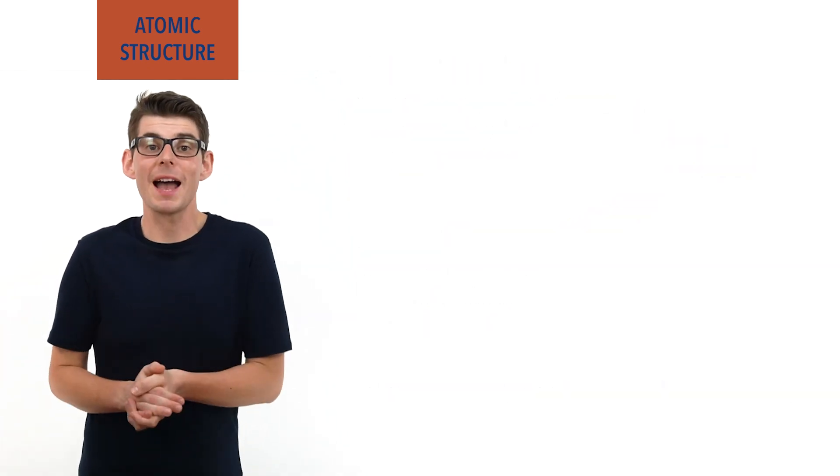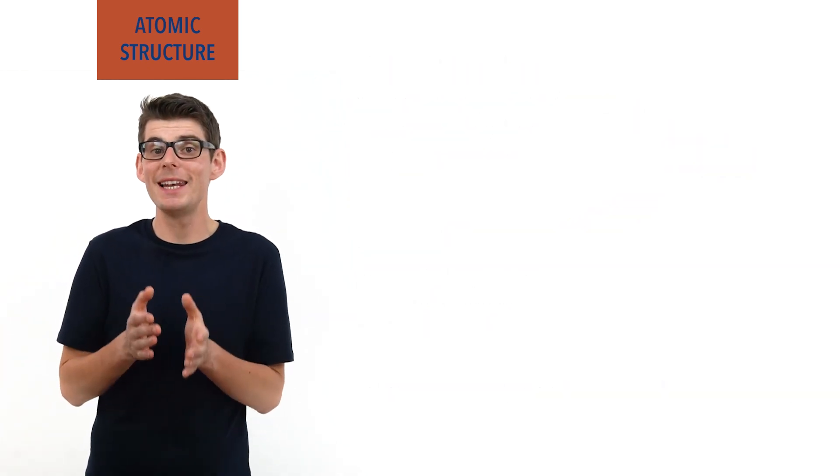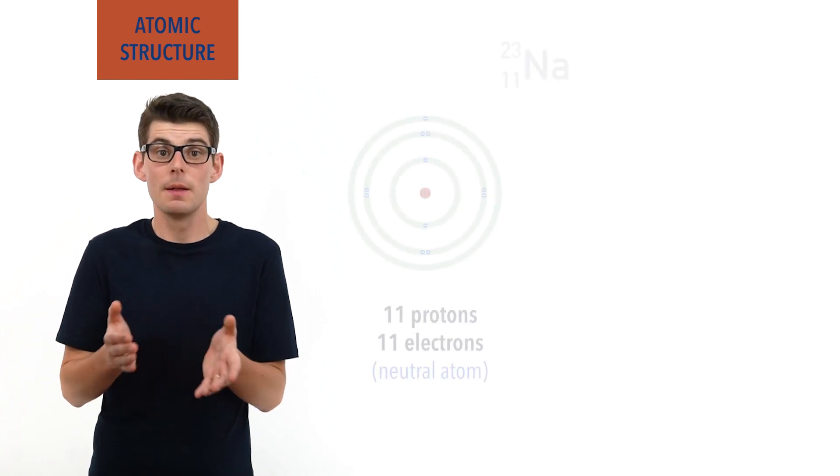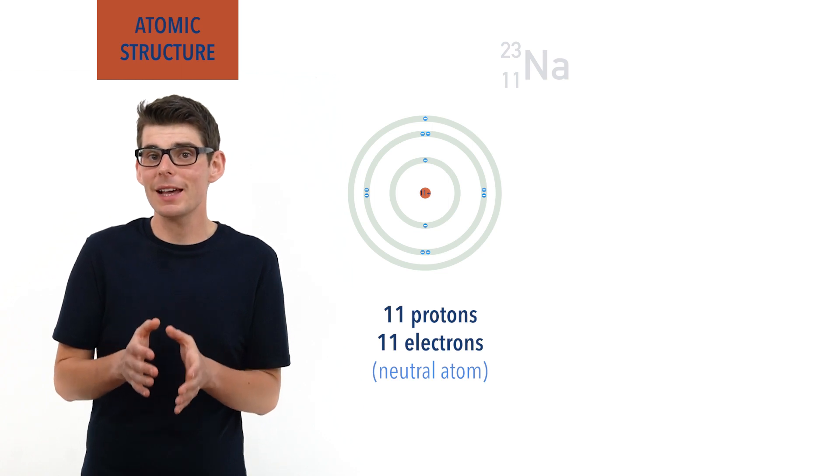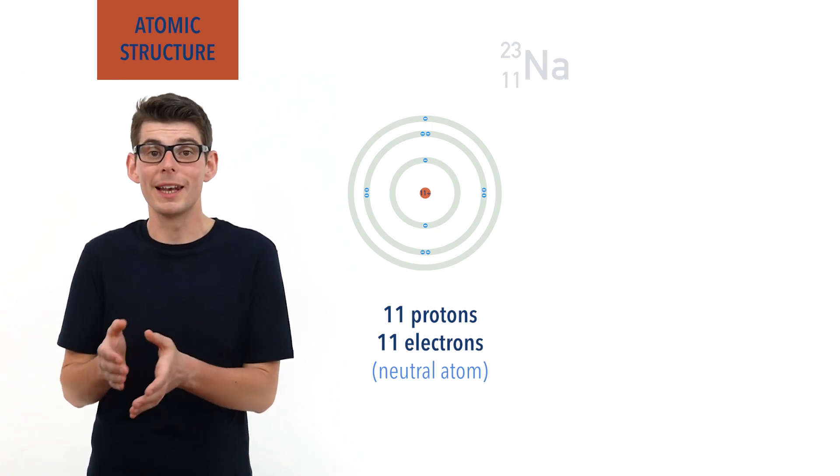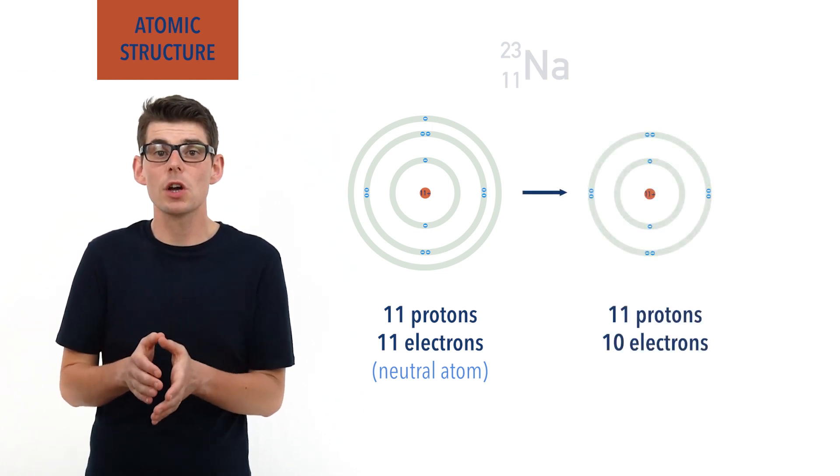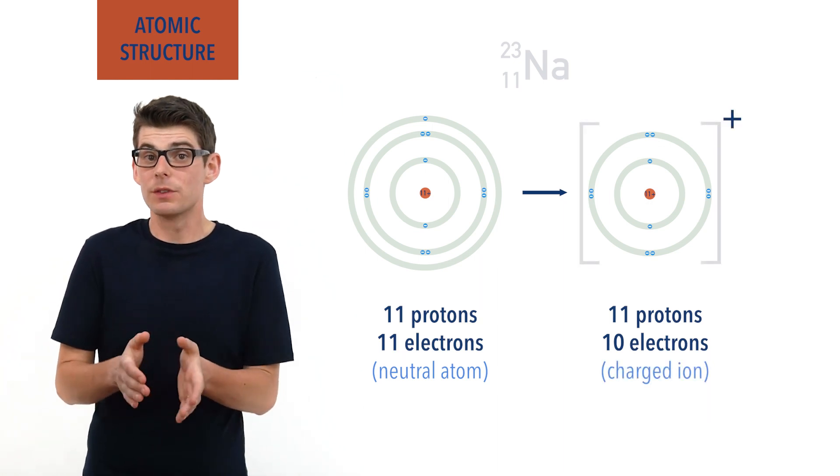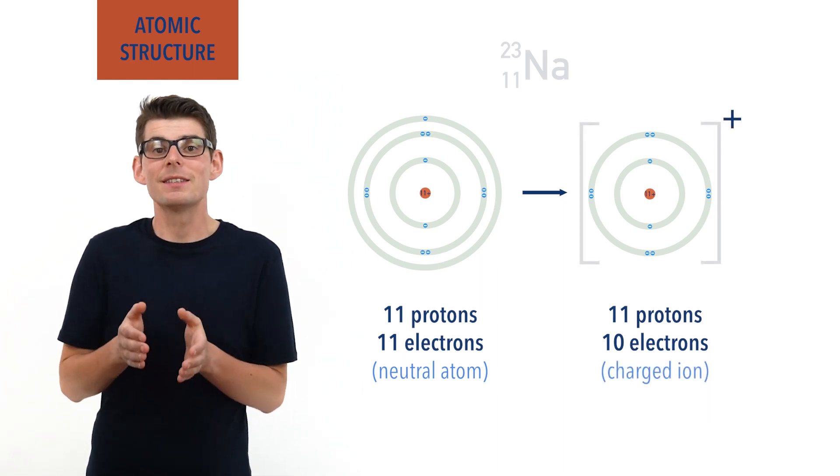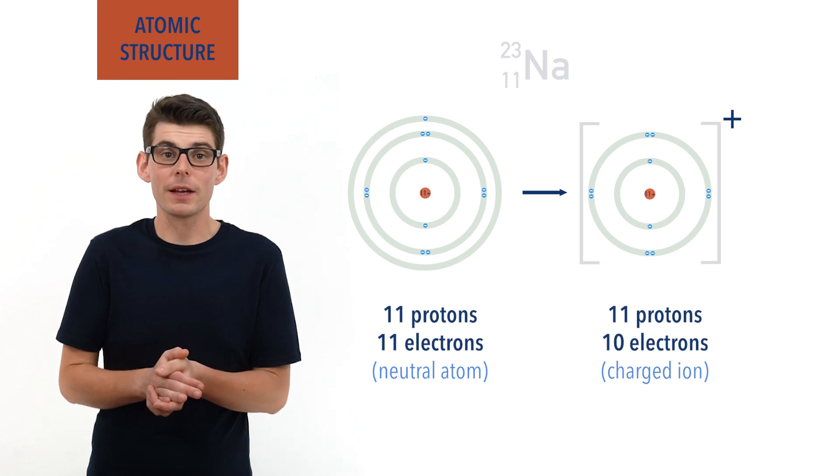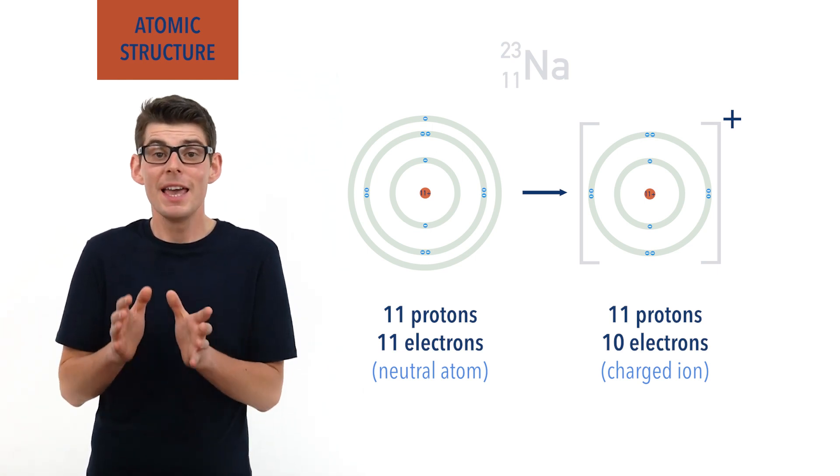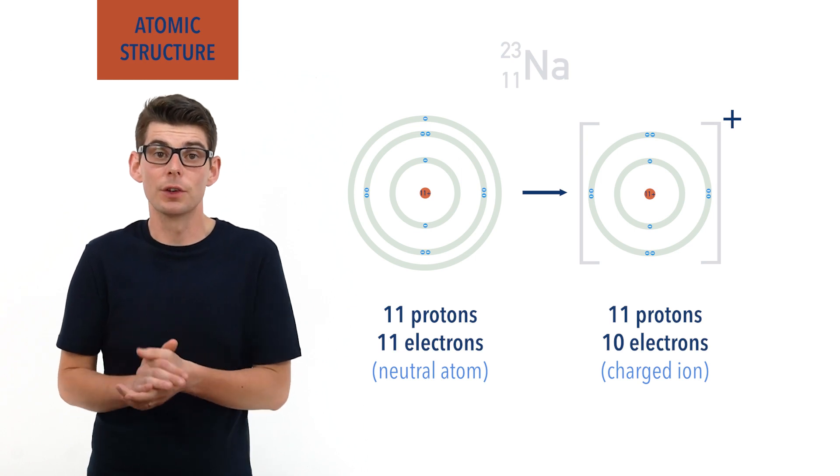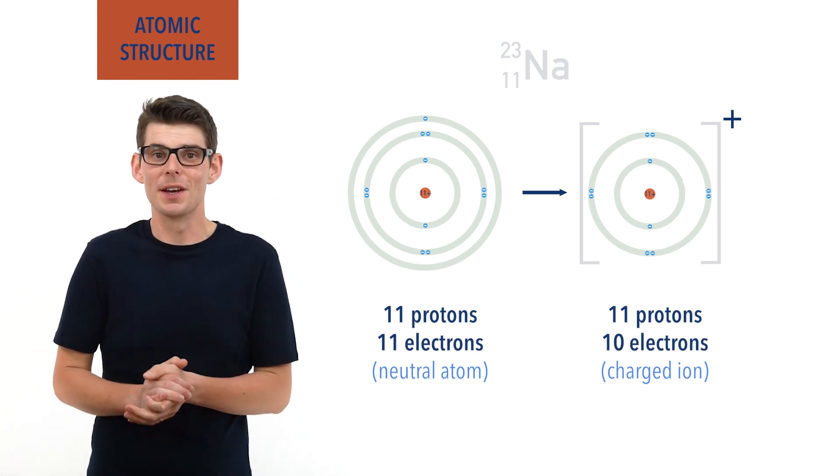For example, as we've seen, sodium has 11 protons in its nucleus, meaning it has an atomic number of 11. When sodium reacts, its atoms often lose one electron, and a positively charged ion is formed. As the number of protons, 11, is now 1 greater than the number of electrons, 10. This has been outlined in more detail in a video about ions and ionic bonding. Check the links in the description below.